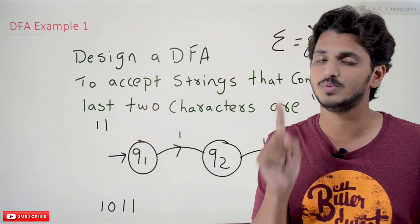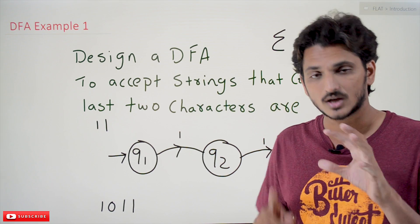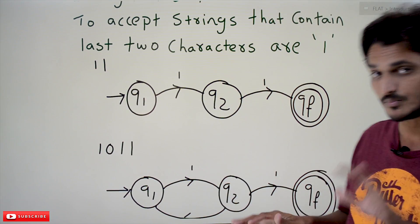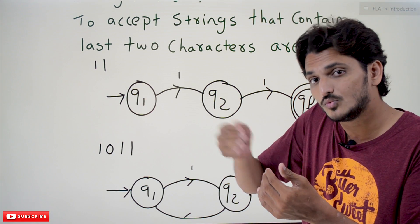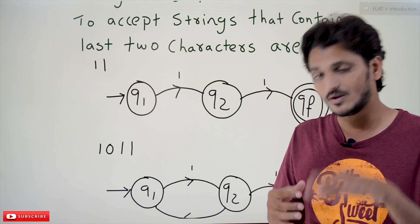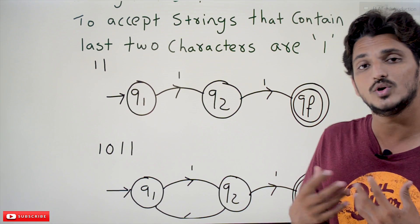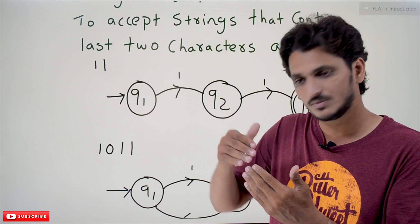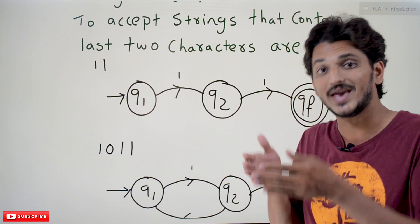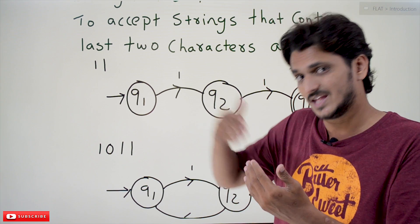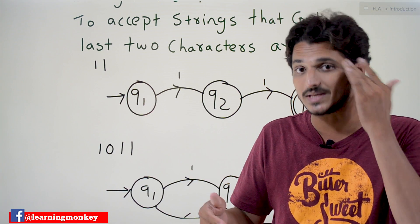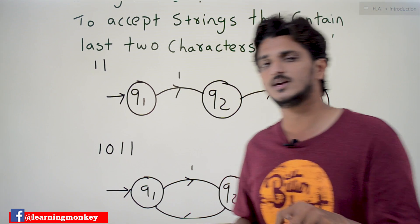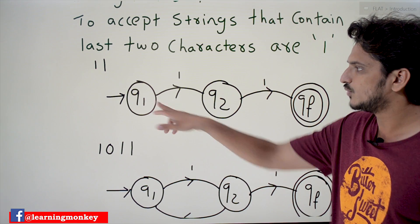In our last class, the logic we constructed for DFA was that the last character should be one. Now, coming to the point of how to construct this — suppose you take two consecutive ones, that is what we have to identify. We discuss that we don't have memory here, so we don't know which character was seen before, and we don't know which character will come next.